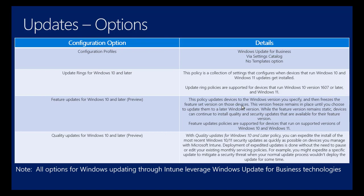All these options actually run through Windows Update for Business technology. Let's clarify what that is. Windows Update for Business, when first introduced, many wondered - is it a cloud service? The answer is no. If you boil down what Windows Update for Business is, it is a collection of settings - registry entries and MDM entries, depending on configuration - that control how Windows Update functions on the device. Windows Update for Business Deployment Service, however, absolutely is a service that works in conjunction with Windows Update.